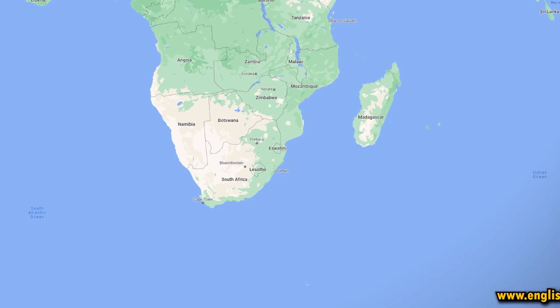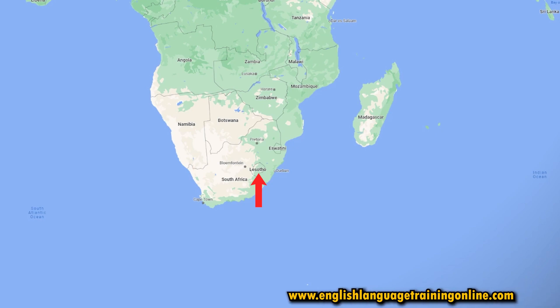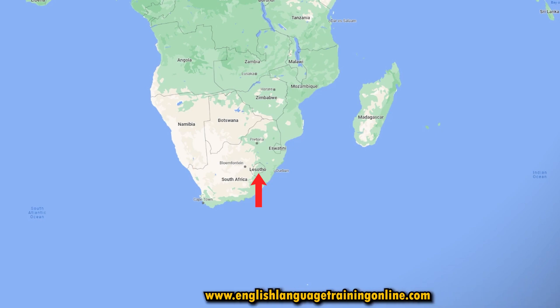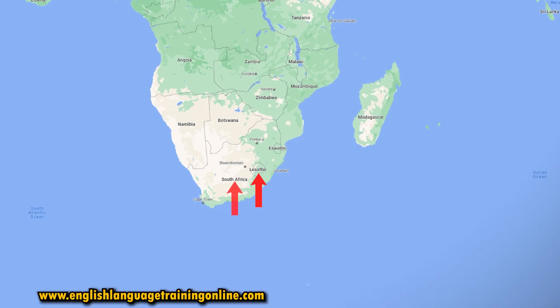In this video we will learn how to pronounce Lesotho. Lesotho is a very small landlocked country on the African continent with a population of around 2.3 million people in 2022 and is situated in the west of South Africa.